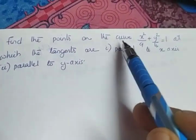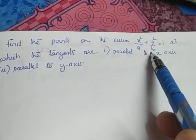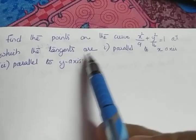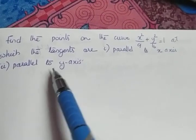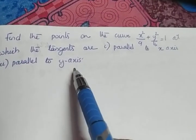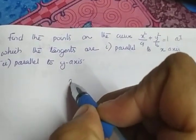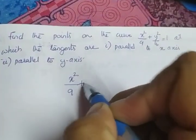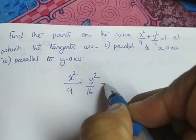Find the points on the curve x²/9 + y²/16 = 1 at which the tangents are — first, parallel to the x-axis, and second, parallel to the y-axis. So we will take the curve x²/9 + y²/16 = 1.